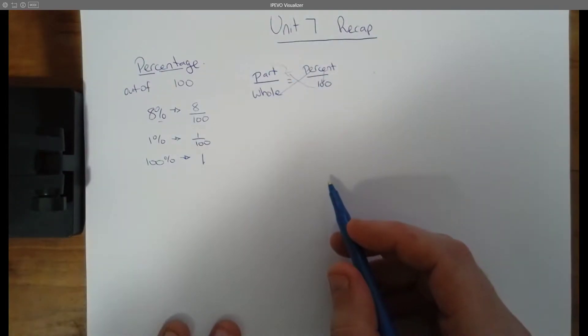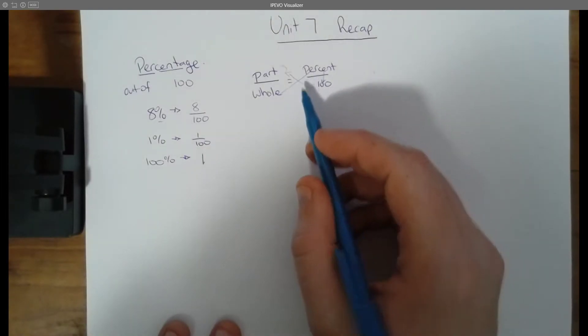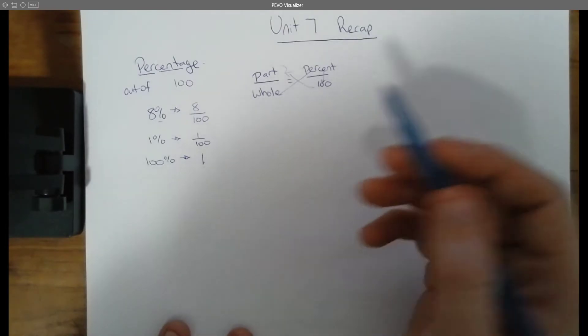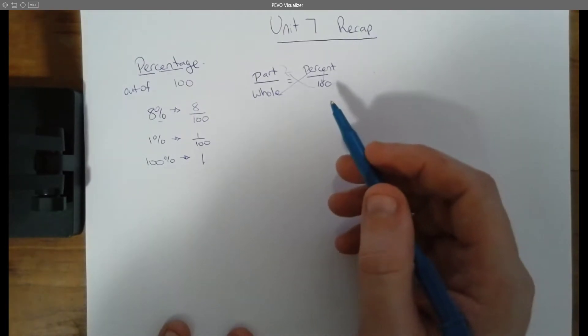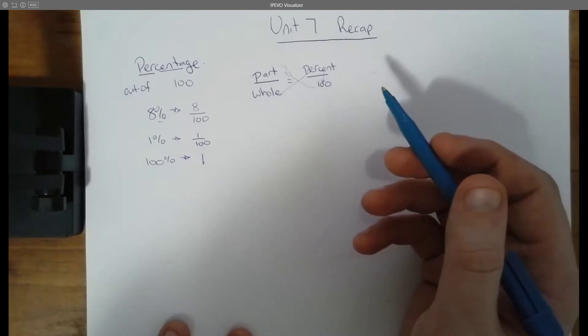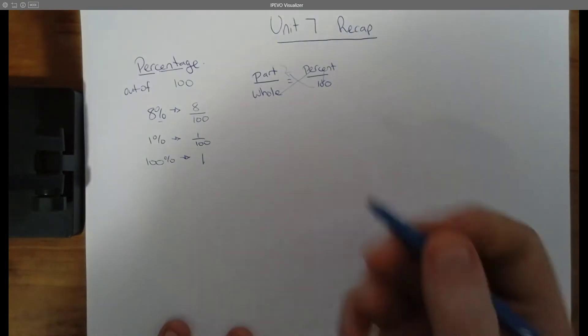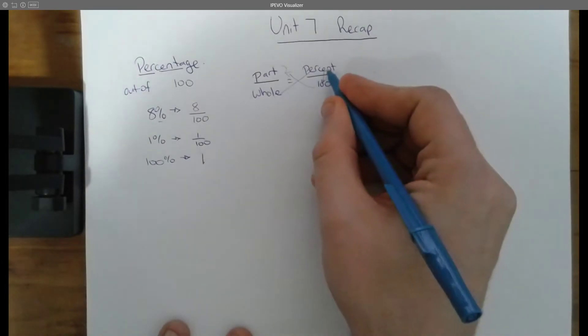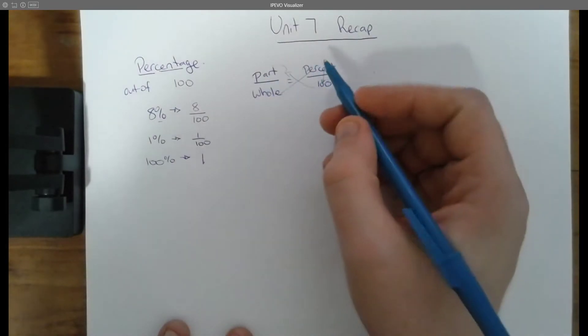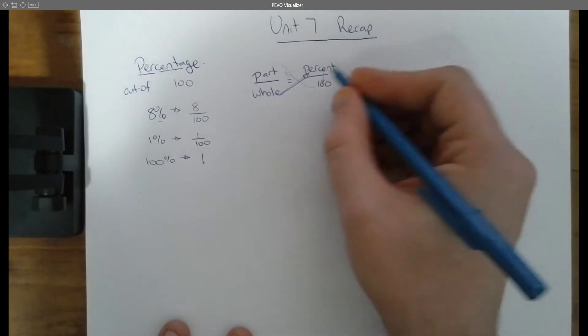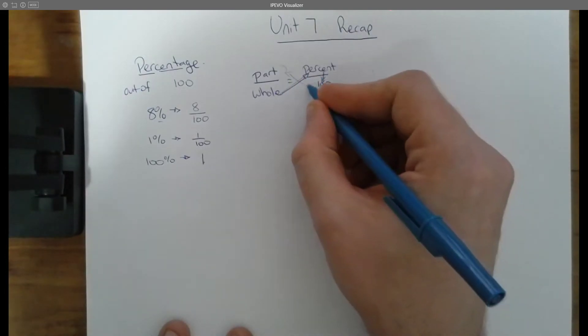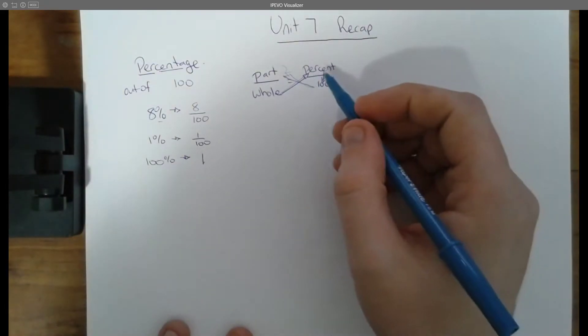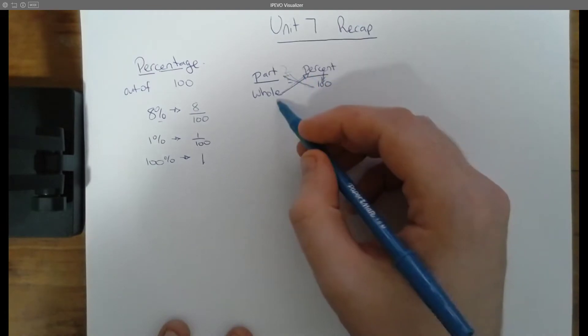If you're in Mrs. Mantle's class, I know she loves to call this the fishy method. And hopefully this might help you. Whatever you're missing here, you can use this method in order to solve for whatever is missing. So let's say, I know the whole and the percent, but I just don't know the part. Well, I can cross over whole times percent divided by 100 equals the part.